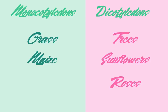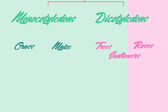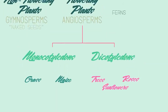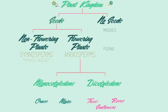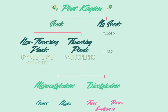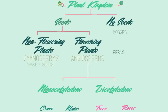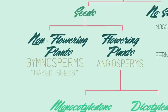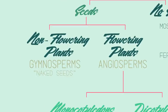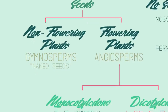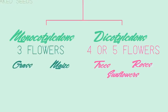So there we have some of the ways plants are classified. Remember that non-flowering plants are called gymnosperms and have naked seeds, and that flowering plants are called angiosperms, which can be separated into monocots and dicots.